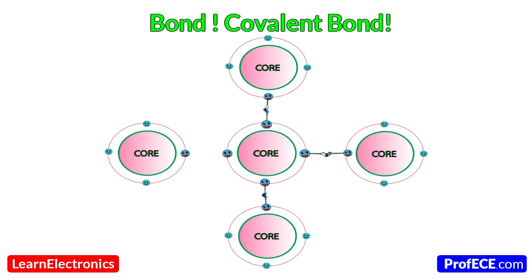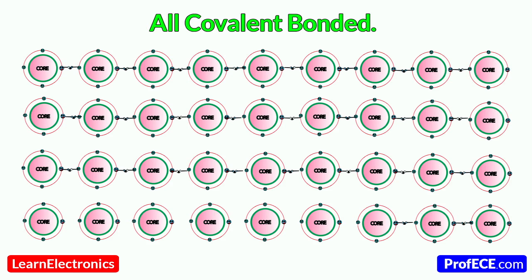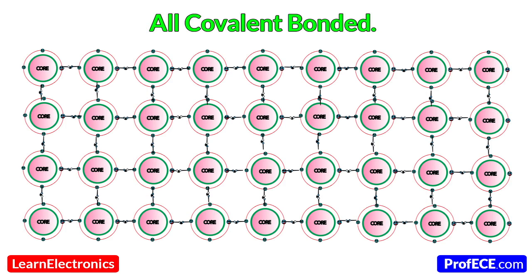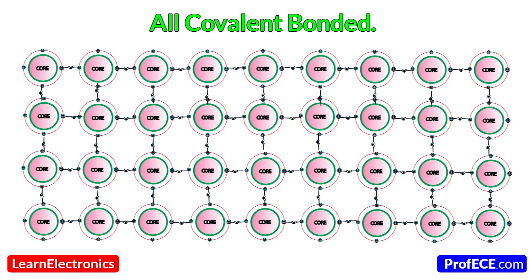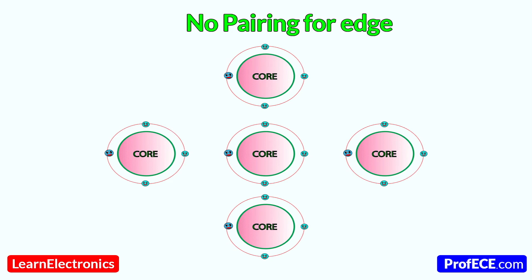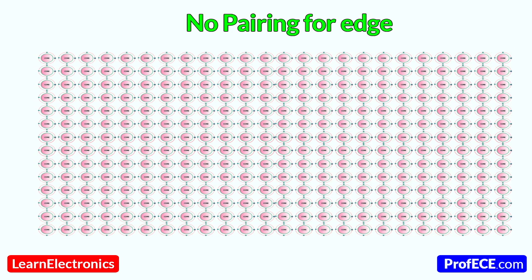Covalent bonds will be created with neighboring atoms' outer orbit electrons. Remaining electrons in the orbit will follow the same electron pair bonding with neighboring atoms, thanks to the equilibrium and symmetric properties of atoms. One by one, all the electrons would be bonded in the atom. At last, all the electrons would be covalent bonded with neighboring or adjacent atoms. Now this area has turned into a silicon crystal due to covalent bonding. Only a few electrons are left unbonded, where the edges of this crystal would not find any nearer atoms.